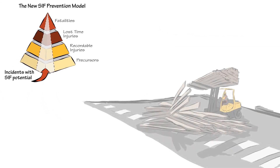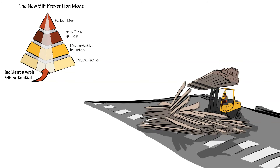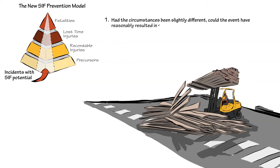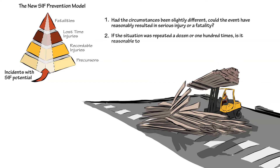Does our example have SIF potential? There are a couple of questions we can ask ourselves: Had the circumstances been slightly different, could the event have reasonably resulted in serious injury or a fatality? And if the situation was repeated a dozen or 100 times, is it reasonable to conclude that the outcome would eventually be a SIF? If the answer to either of these questions is yes, then we consider this a SIFP.